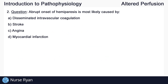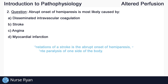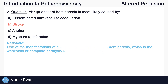Moving on to question number two: abrupt onset of hemiparesis is most likely caused by? The answer is B — stroke. One of the manifestations of a stroke is the abrupt onset of hemiparesis, which is the weakness or complete paralysis of one side of the body.